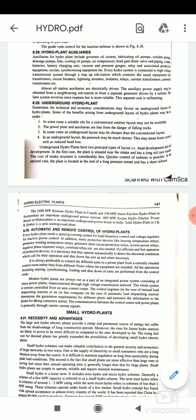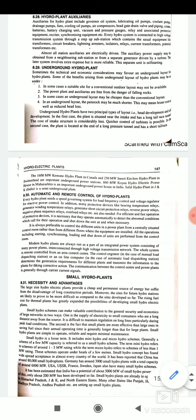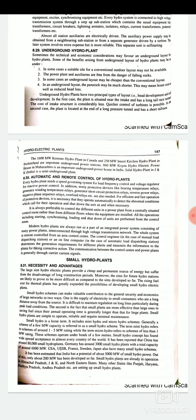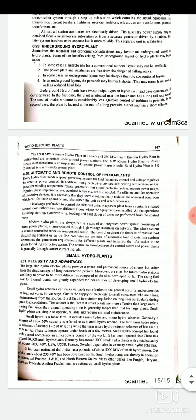All the station auxiliaries are electrically driven. The auxiliaries power supply may be obtained from a neighboring substation or from a separate generator driven by a turbine. The later system involves extra expenditure but is more reliable. So this separate unit is self starting. This is underground hydro plants may be also in nature and also in operated conditions. Next is your automatic and remote control of hydropower plants also is their automation in the hydroelectric power plant also come into the picture. And the next is your small hydropower plants that is for the necessity and the advantages for the remote areas to supply the power in a small area. So the large size hydroelectric power plants provide a cheap and permanent source of energy but suffer from the disadvantages of long construction periods. Moreover, the site of our future hydro stations are likely to prove to be more difficult as compared to the site developed so far. So the rising fuel cost for thermal power plants has generally expanded the possibilities of developing the small hydroelectric power plants.